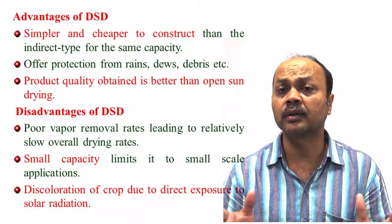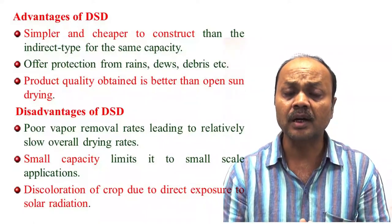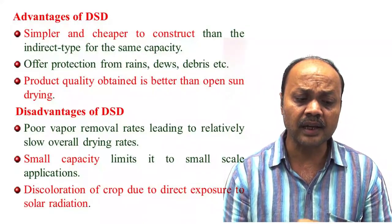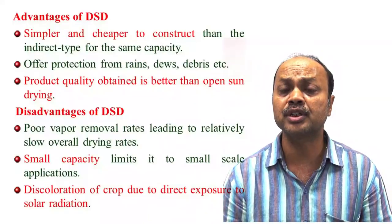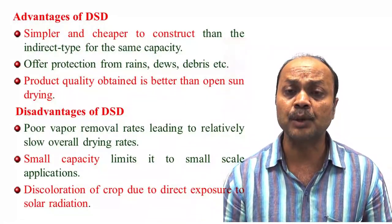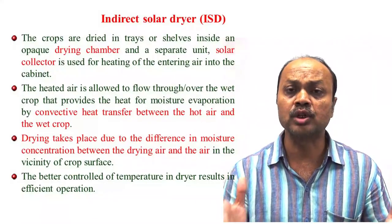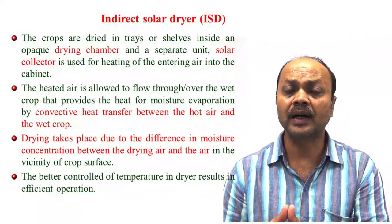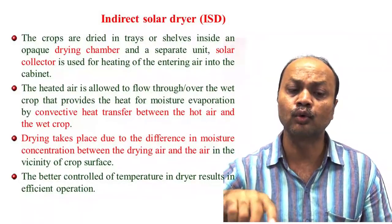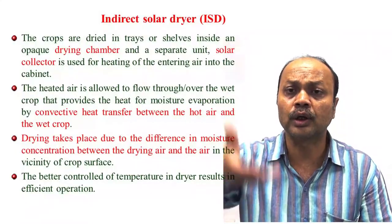Advantages of direct solar dryer: simpler and cheaper to construct, and product quality is better than open sun drying. Disadvantages: capacity is normally small because you are using the same chamber. Because direct solar radiation is coming to the food product, discoloration can be a problem depending on which type of food product you are drying. In indirect solar dryers, there are two chambers: a drying chamber and a solar collector. In the solar collector, we are collecting energy and heating the air. That heated air is then passed through the drying chamber. Due to convective heat transfer between hot air and wet crop, the produce loses moisture. The drying chamber is opaque — meaning the greenhouse effect is not happening inside the drying chamber.